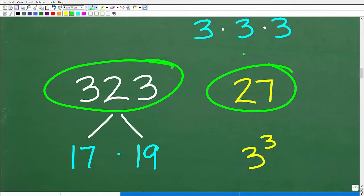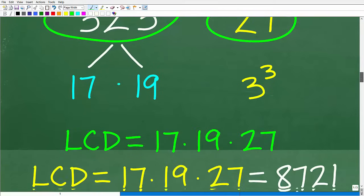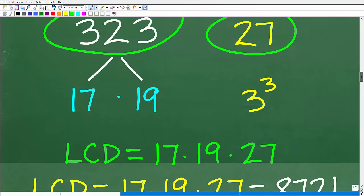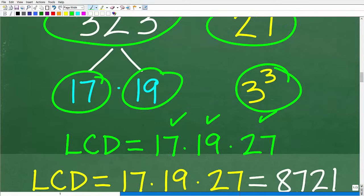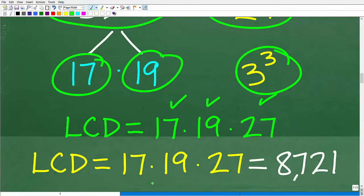Now, once we do have the prime factors, now we can build the LCD. So let's go ahead and build the LCD to this problem. So the LCD is going to be the product of all the individual prime factors. So we need a 17, okay? We need this 19, and then we need 3 cubed, right? Which of course is 27. So 17 times 19 times 27 is going to be the actual lowest common denominator, which is 8721.